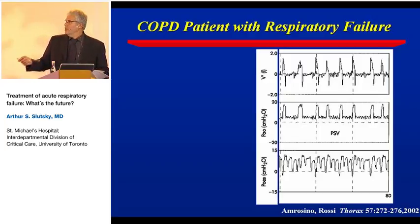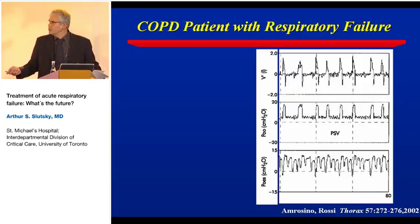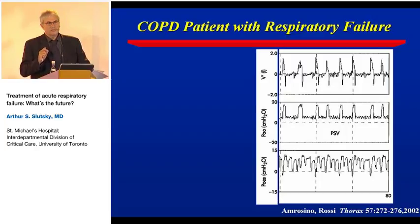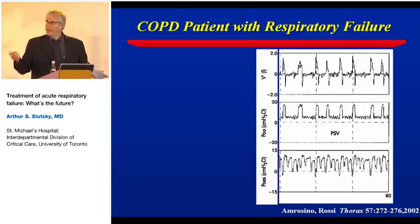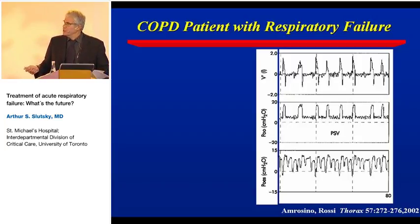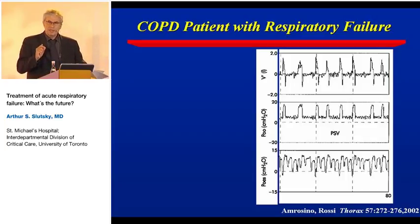As you change the pressure support level, you can change the patient's real respiratory rate, and you can be fooled dramatically. You might be lowering pressure support, and all of a sudden the rate measured at the airway appears to go up. If you're not careful, you'll say the patient's not being supported well enough — when in fact you've lowered it sufficiently so each breath captures. Patient-ventilator asynchrony is a major problem, often undetected.